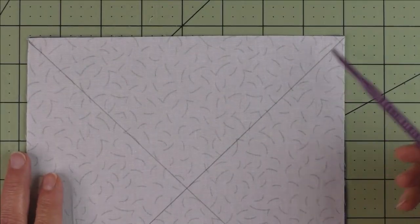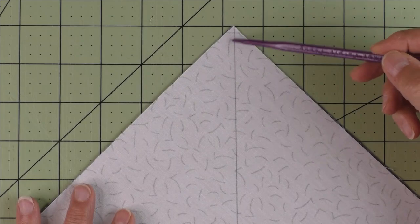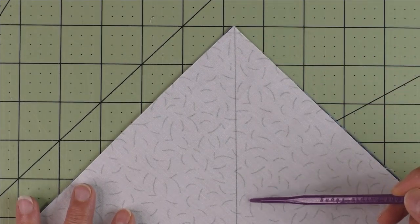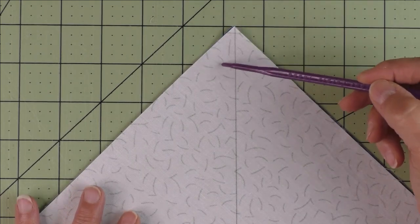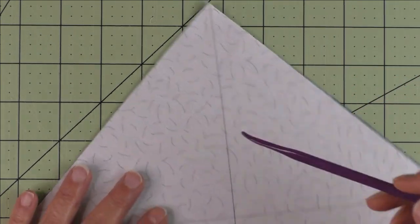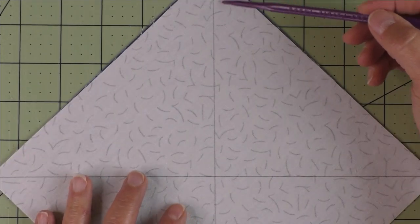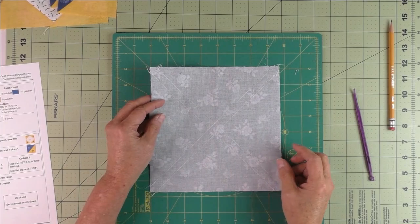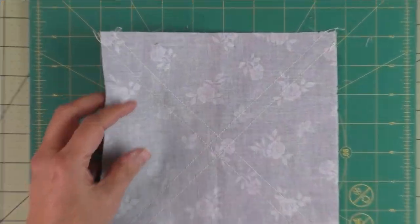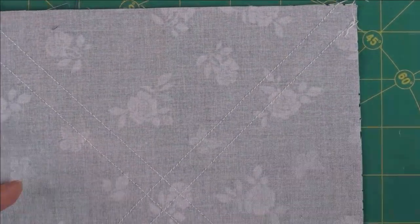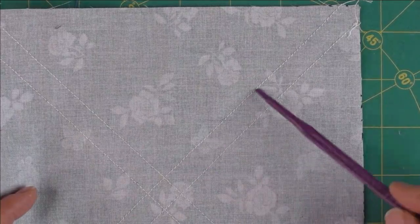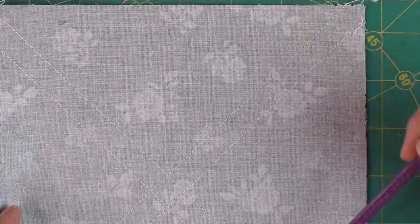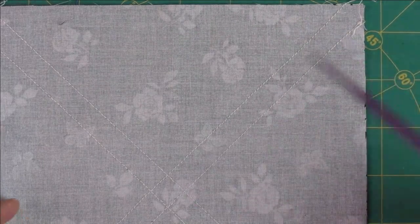Next I'll go to the sewing machine and on either side of the drawn line I'm going to stitch a quarter of an inch. So a quarter of an inch on this side, quarter of an inch on this side. Turn it around and do the same thing over here. I have stitched on either side of the drawn line. There are two lines of stitching going this way and going this way and the drawn line is right in the middle of them.